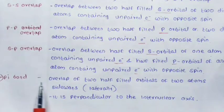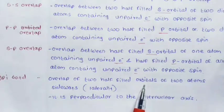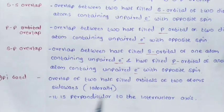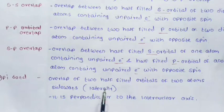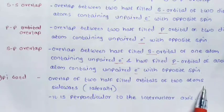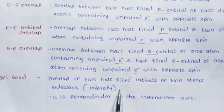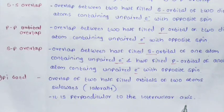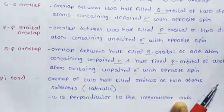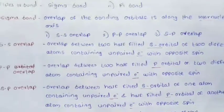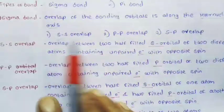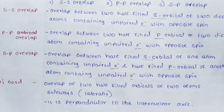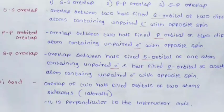The pi bond forms by the overlap of two half-filled orbitals of two atoms sidewise or laterally. This pi bond is perpendicular to the internuclear axis. The difference between sigma bond and pi bond: sigma bond forms along the internuclear axis, while pi bond forms sidewise or laterally, perpendicular to the internuclear axis.